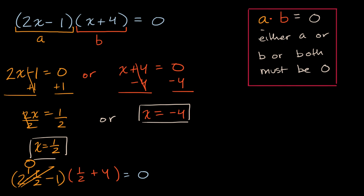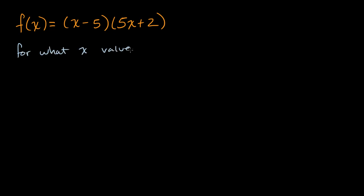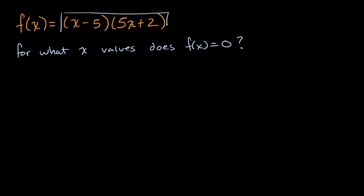Let's do one more example. Let's say someone told you that f of x is equal to x minus five times five x plus two, and someone said find the zeros of f of x. The zeros are the x values that make f of x equal to zero. When does f of x equal zero? That's what people are really asking when they say find the zeros of f of x. So f of x equals zero when this expression right over here is equal to zero.